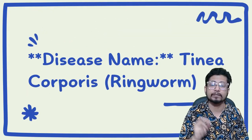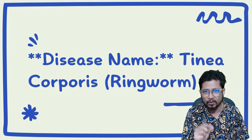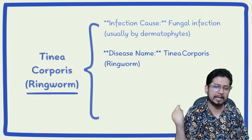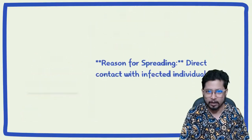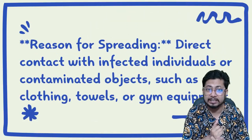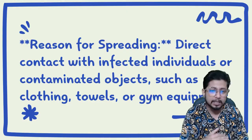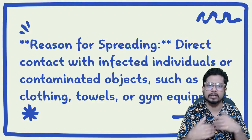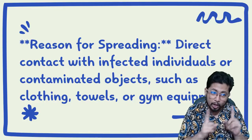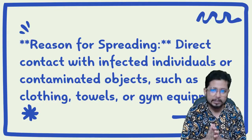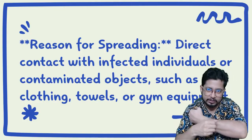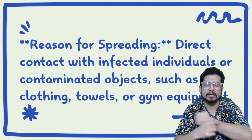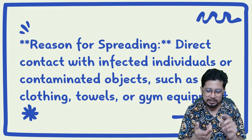The disease is known as Tinea corporis infection, or simply as ringworm infection. You can clearly see the image. Regarding how it spreads, it has direct contact spread — if an infected person has direct contact with another individual it can spread, or through a contaminated object.